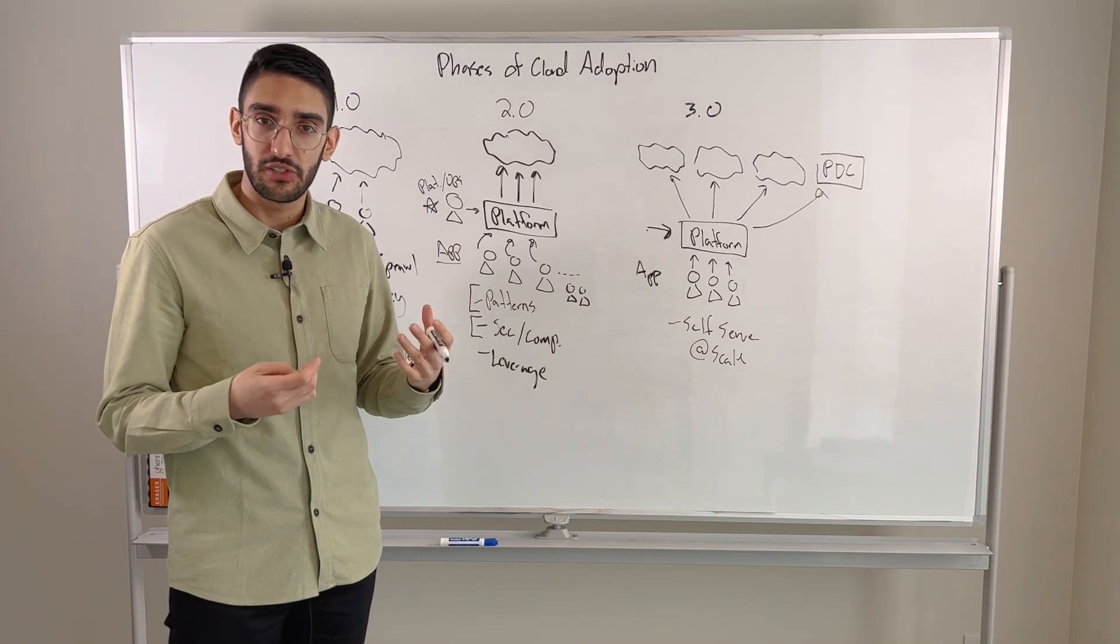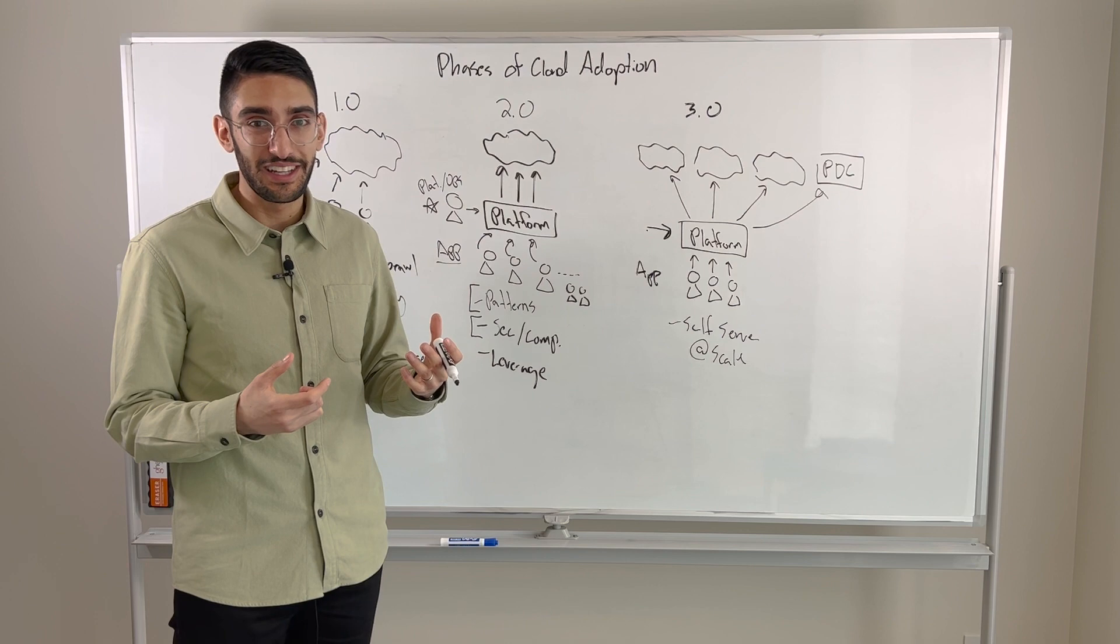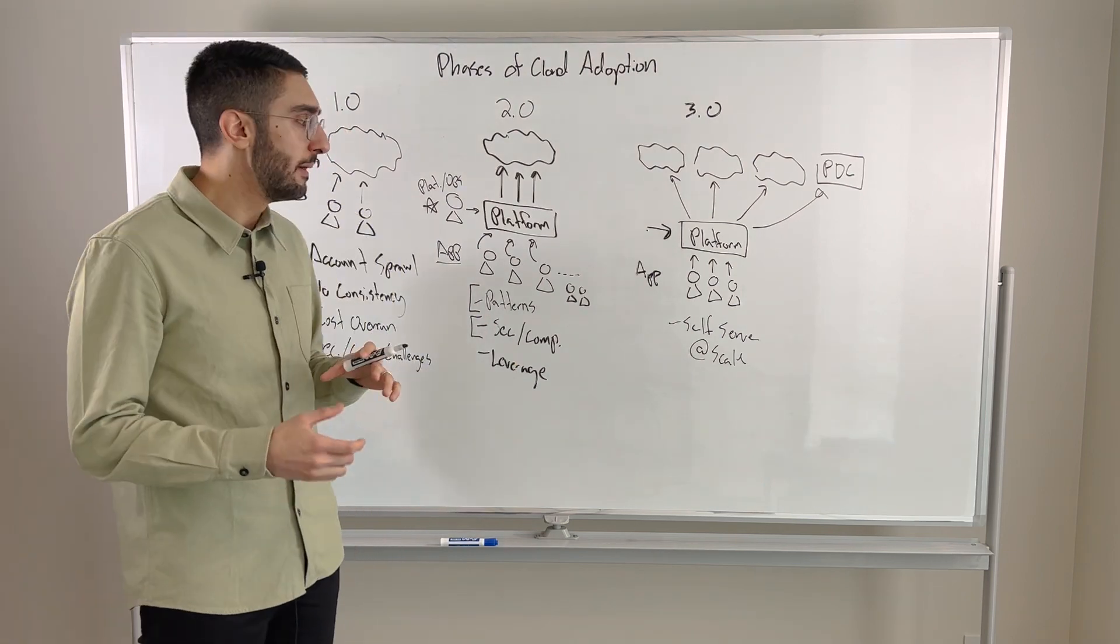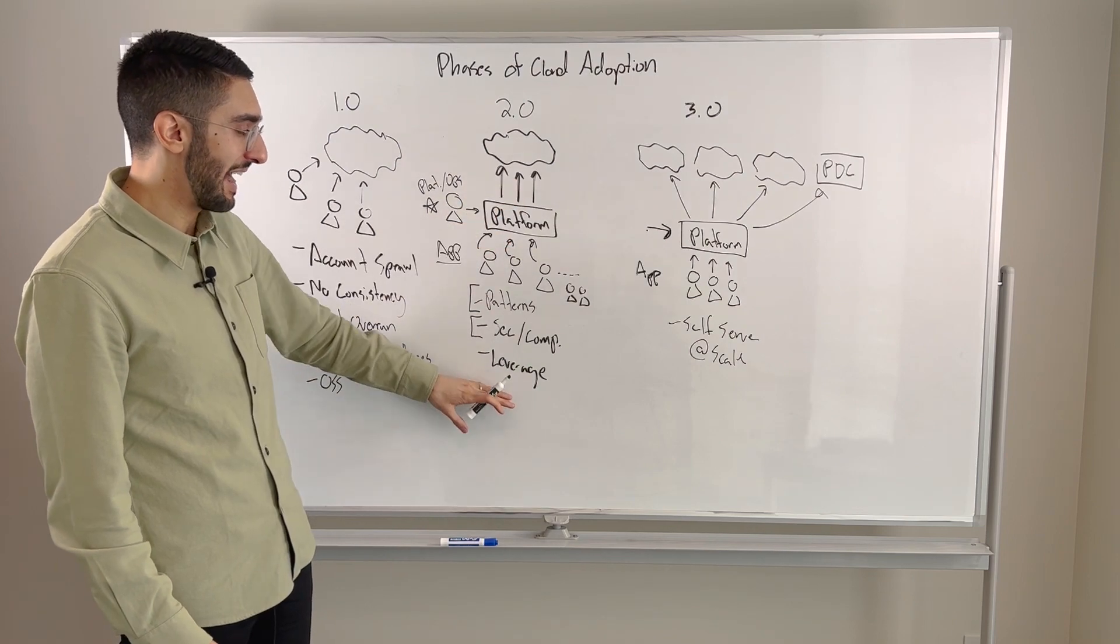How do I enable security controls and compliance controls? That might be leveraging some of our policy as code capabilities, some of the governance capabilities, certainly includes things like single sign-on role-based access control.